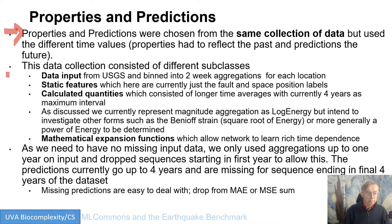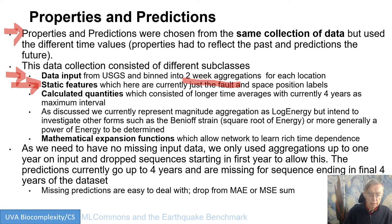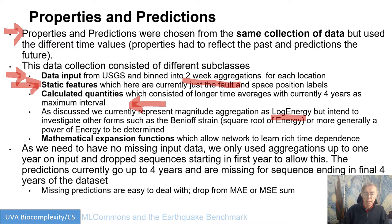Here we have the data going to properties and predictions. We have the data input in two-week aggregations. We have static features, which in some problems like hydrology and medical data can be quite substantial — in this case just the space-filling curve designations of faults. Then we have the calculated quantities, which are unusually large for this project, because we're going to calculate longer time averages with the moment — four years as the maximum interval. We're currently doing everything as log energy, but we want to look at the Benioff strain, which is the square root of energy or a general power of energy, including principal energy itself.